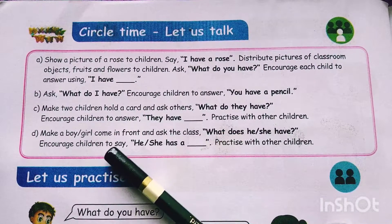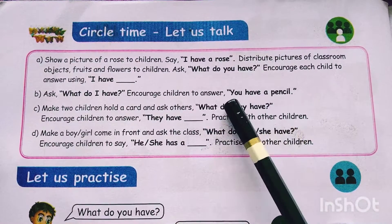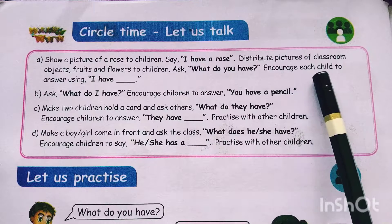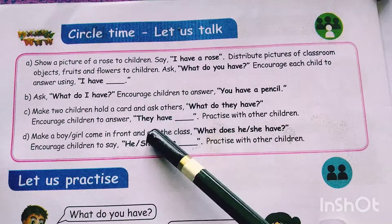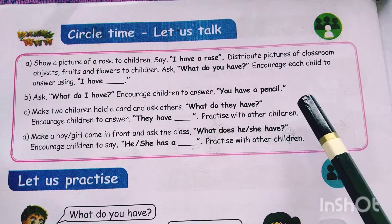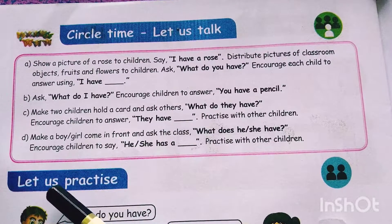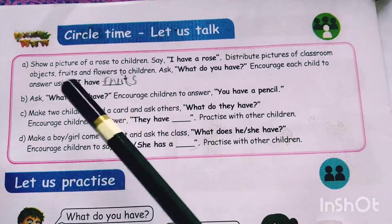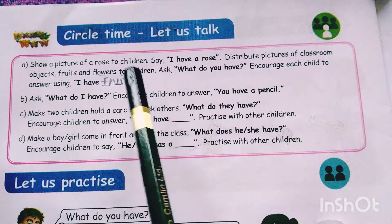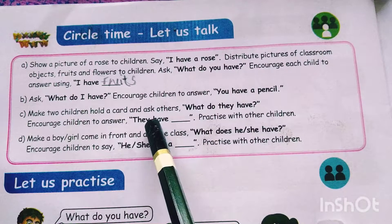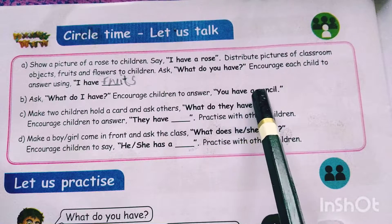Circle time. Let us talk. Show a picture of a rose to children. Say: 'I have a rose.' Distribute pictures of classroom objects, fruits and flowers to children. Ask: 'What do you have?' Encourage each child to answer using 'I have...' Ask: 'What do I have?' Encourage children to answer: 'You have a pencil.'